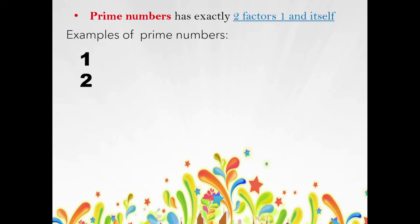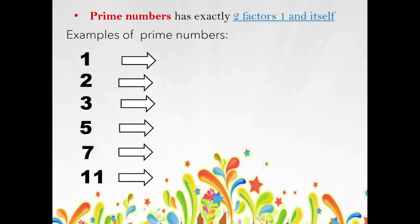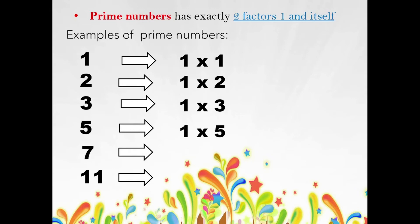So we have here 1, 2, 3, 5, 7, and 11 — those are examples of prime numbers. What are their factors? For 1: 1×1. For 2: 1×2. For 3: 1×3. For 5: 1×5. For 7: 1×7. For 11: 1×11. As you can see, these prime numbers can only be multiplied by 1 and themselves — that is what makes them prime numbers.